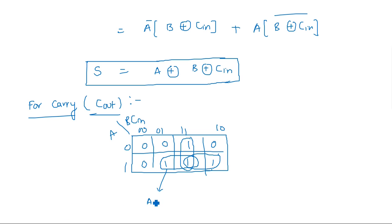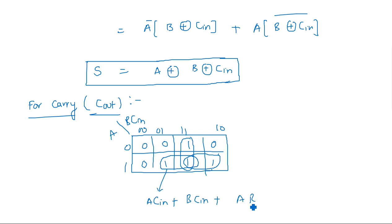The min terms from the K-map groupings give the expression for Cout as: Cout = ACin + BCin + AB. This is the expression for the carry output of the full adder.